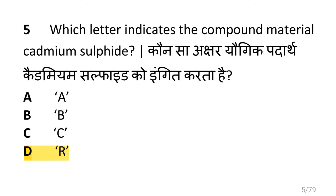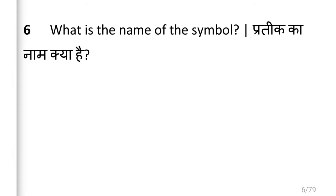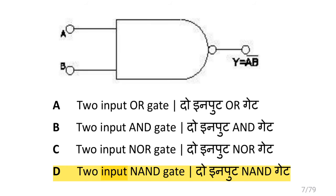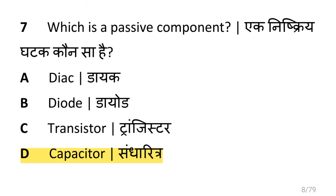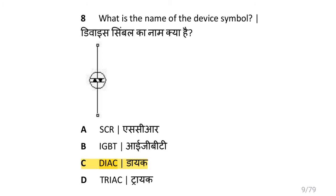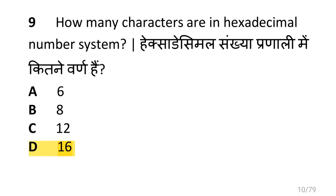Which letter indicates the compound material cadmium sulphide? i.e. R (LDR). What is the name of the symbol? i.e. two-input NAND gate. Which is a passive component? i.e. capacitor. What is the name of the device symbol? i.e. DIAC.